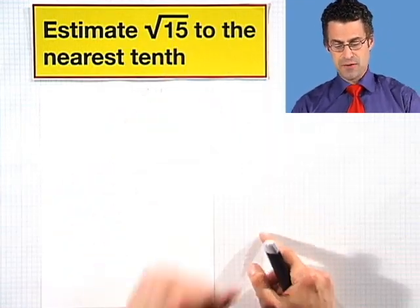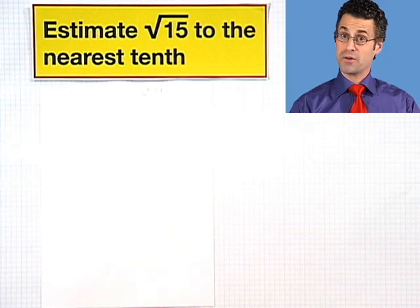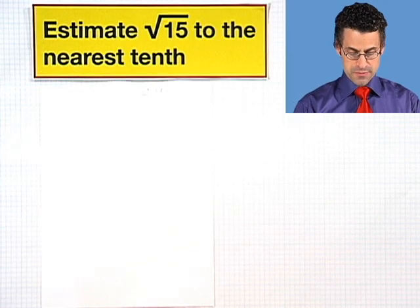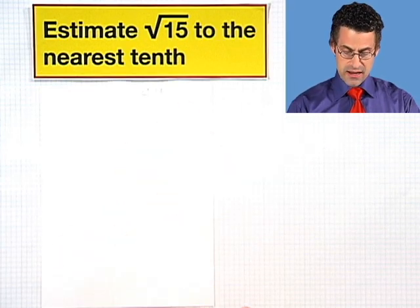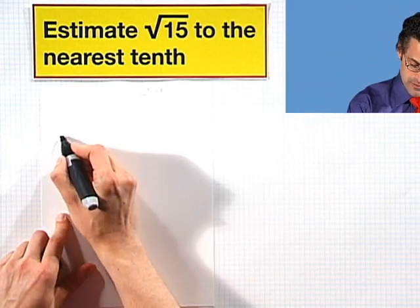Well the way to proceed is to think about 15 and sort of step down until I hit a perfect square. Well the first perfect square that I could think of that I would hit would be the square root of 9. So if I think of 9, that's a perfect square.